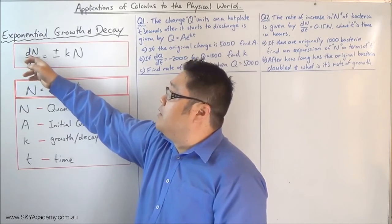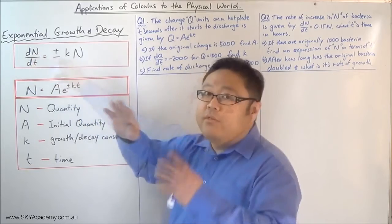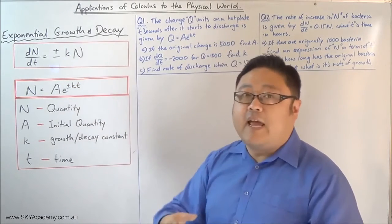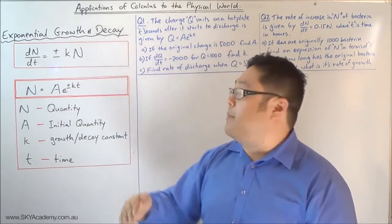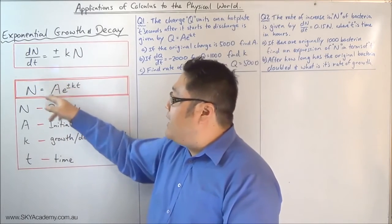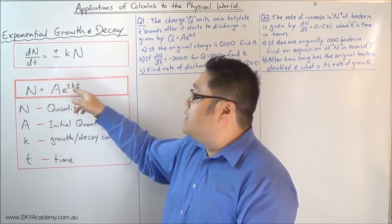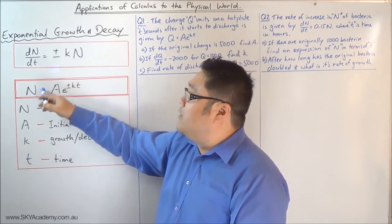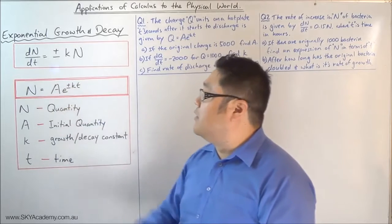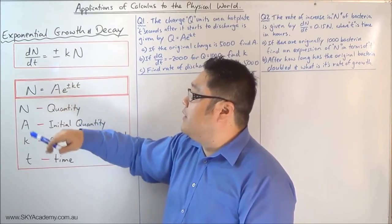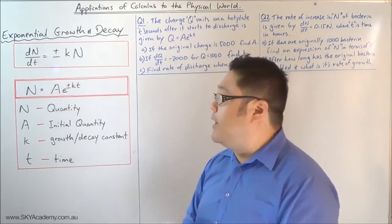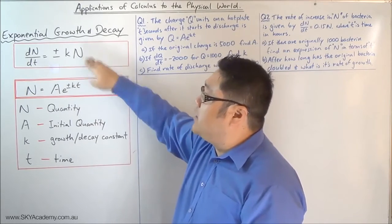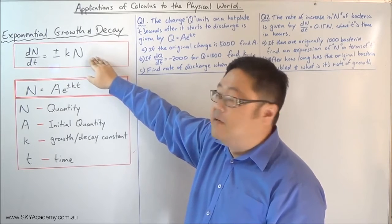So where you've got the rate of change of n over t — dn over dt — the growth and decay formula suggests it's proportional to the quantity we have, which makes it exponential. Only in an exponential will the derivative of a function be proportional to the function itself. So whenever you see something like that, you can take the next step and say the formula for n will look like this: a times e to the power of a constant times time.